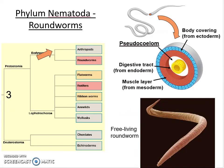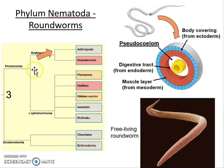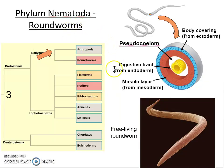Now let's move on. We're still looking at the protostomes — organisms that form the mouth before the anus on their digestive tract. Looking at the group at the top of the tree, we're starting to look at roundworms and arthropods. Roundworms are interesting because they don't have a true coelom — that cavity has to be derived exclusively from mesoderm tissue.